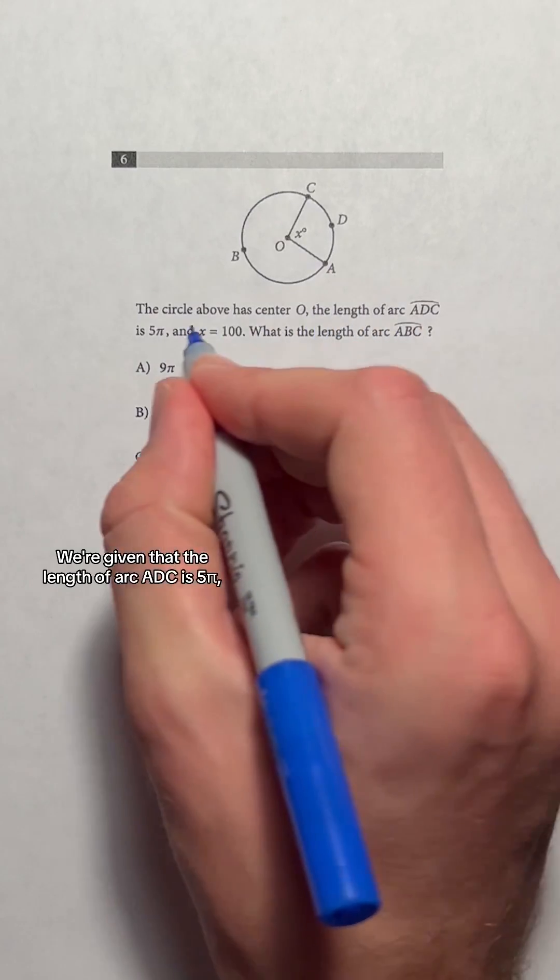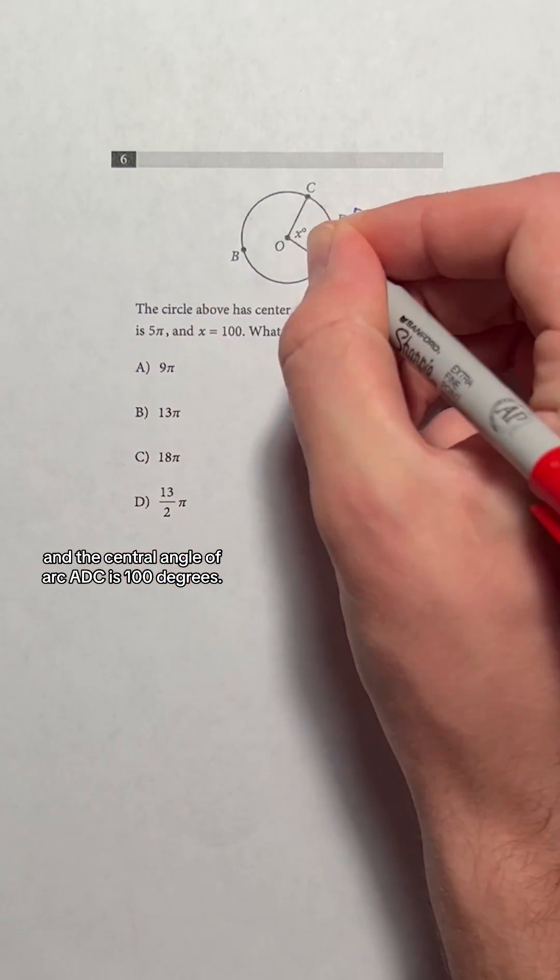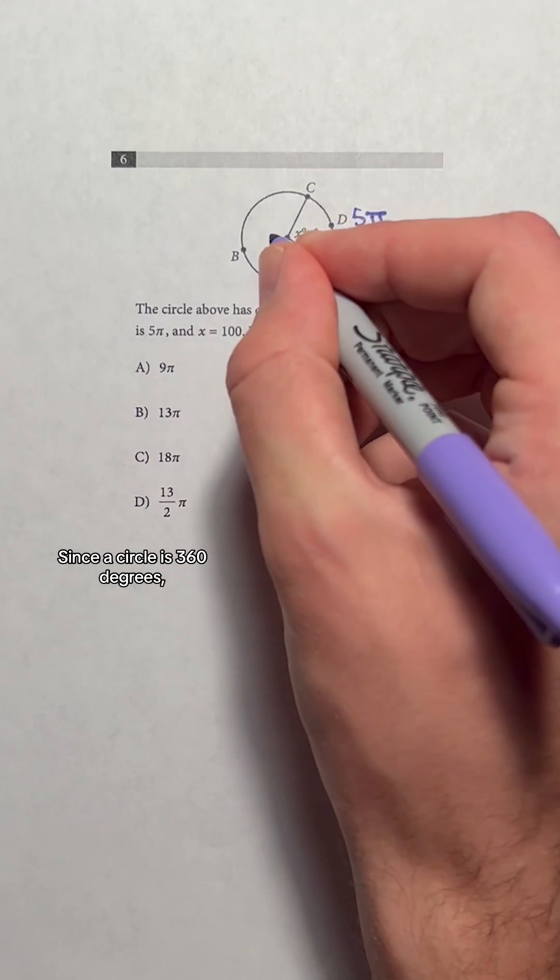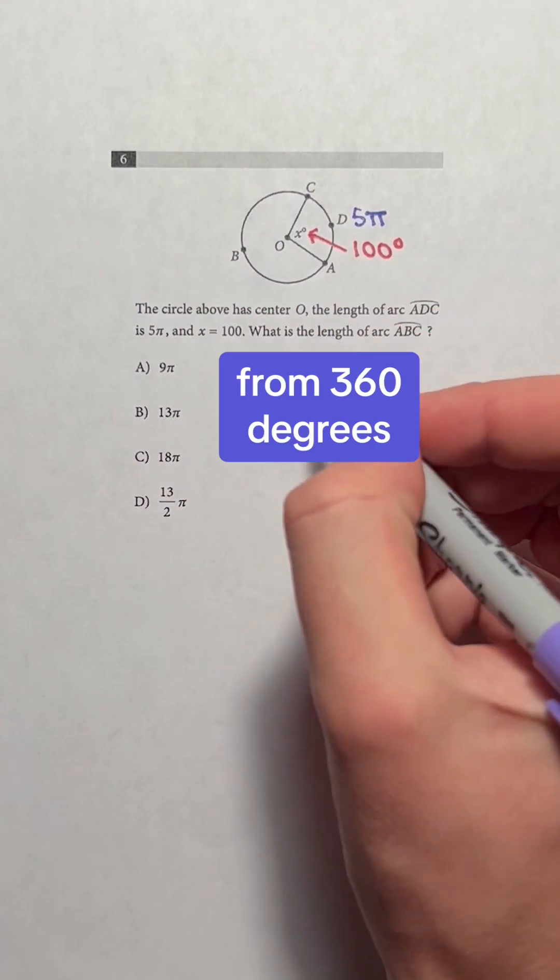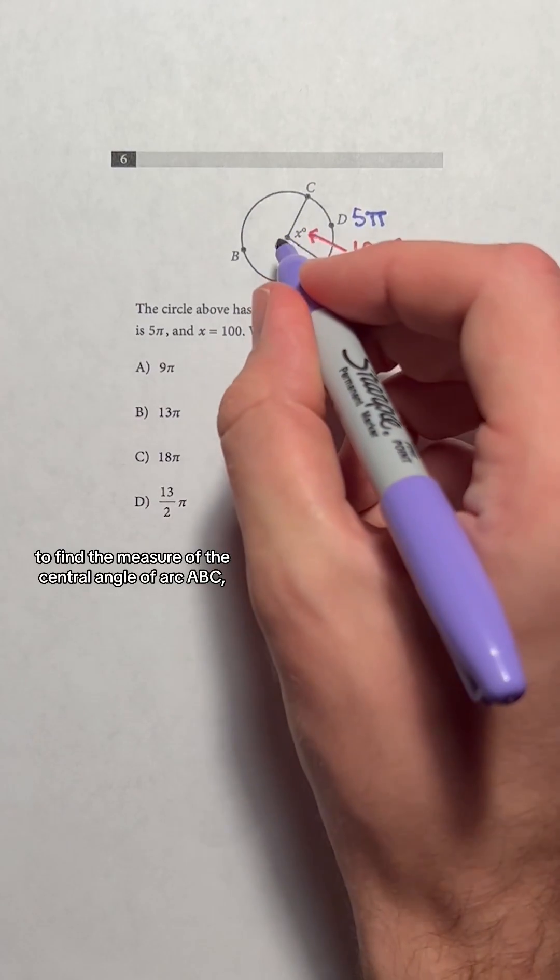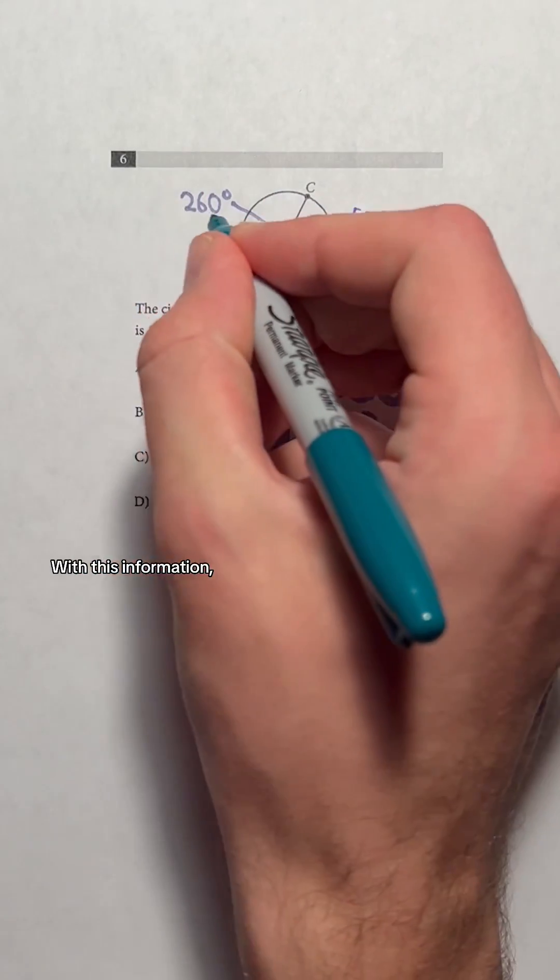We're given that the length of arc ADC is 5π and the central angle of arc ADC is 100 degrees. Since a circle is 360 degrees, we can subtract 100 degrees from 360 degrees to find the measure of the central angle of arc ABC and we get 260 degrees.